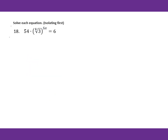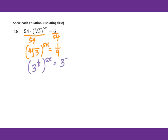For number 18, divide by 54 on both sides. You get the 4th root of 3 to the 5x power equals 1 over 9. We can make base 3: the 4th root means 3 to the 1 over 4th power, applied to 5x gives 3 to the 5x over 4. The right side is 3 to the negative 2nd power. Cancel the base: 5x over 4 equals negative 2. Cross multiply: 5x equals negative 8, so x equals negative 8 over 5.